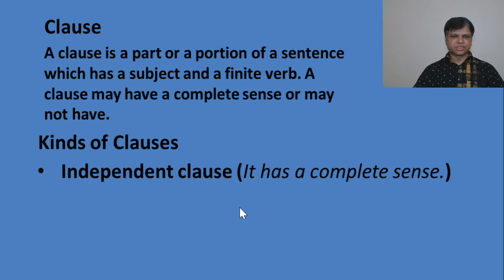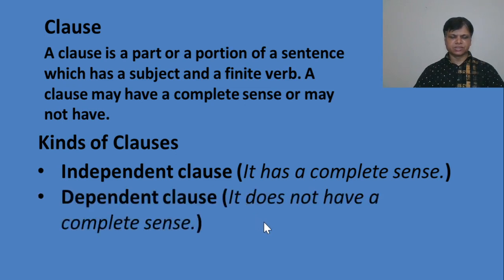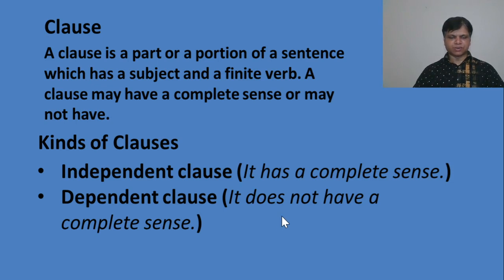Kinds of clauses: There are two types of clauses — independent clause, also called coordinate clause, and dependent clause, also called subordinate clause. An independent clause has a complete sense, and it does not depend on other clauses for its meaning. A dependent clause does not have a complete sense and depends on the independent clause for completing its sense.